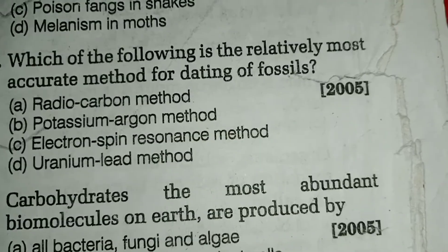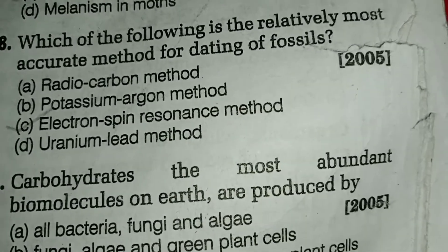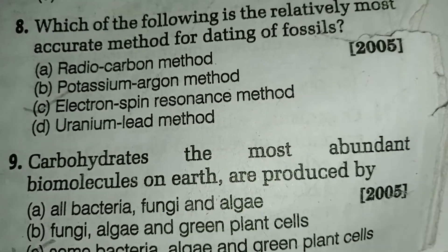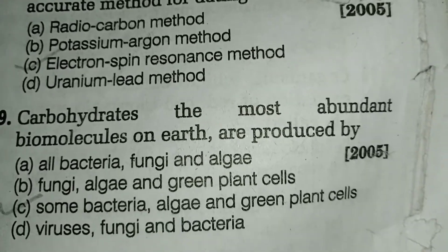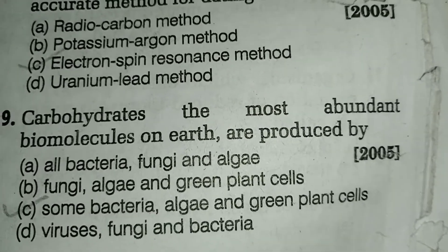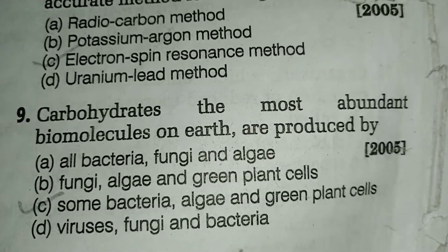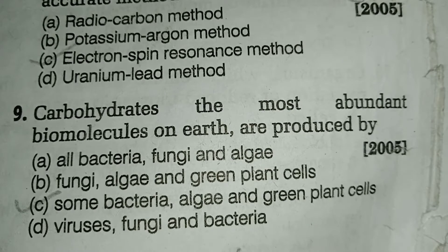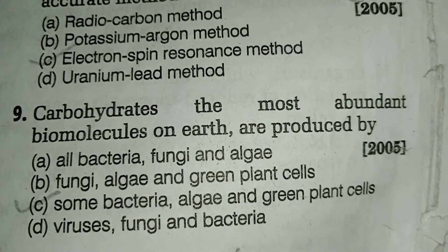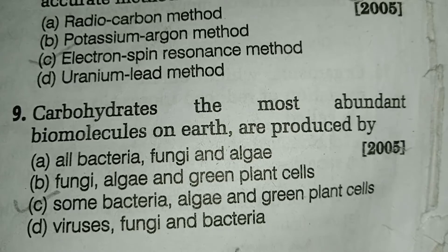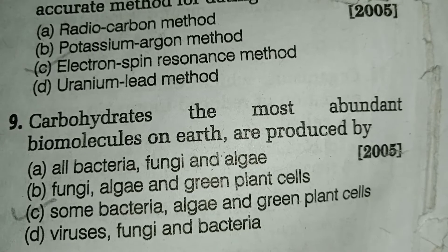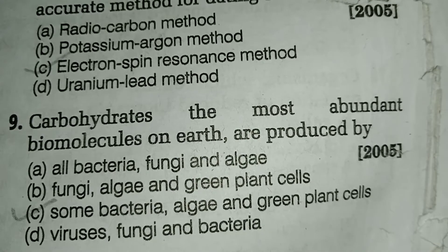Question number nine: carbohydrates, the most abundant biomolecule on earth, are produced by — the answer is option number C, some bacteria, algae, and green plant cells. Some photosynthetic bacteria such as Rhodopseudomonas can prepare carbohydrates,